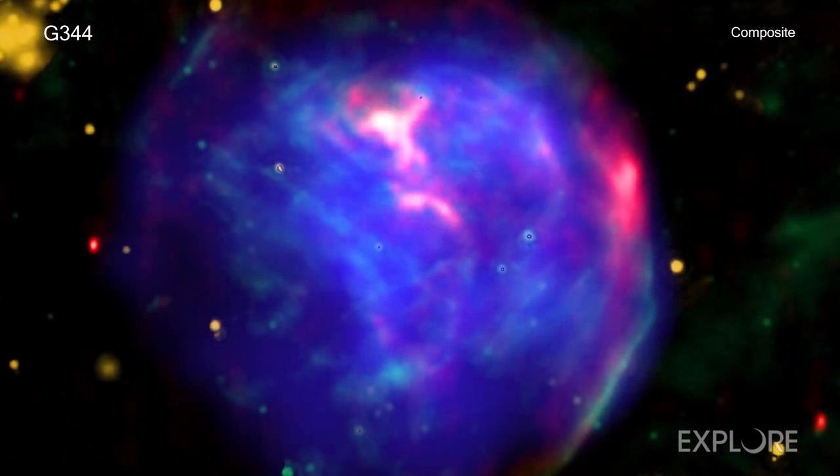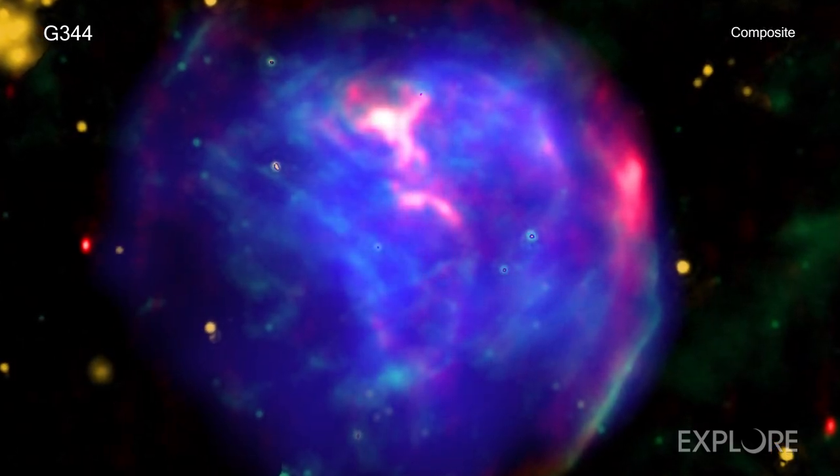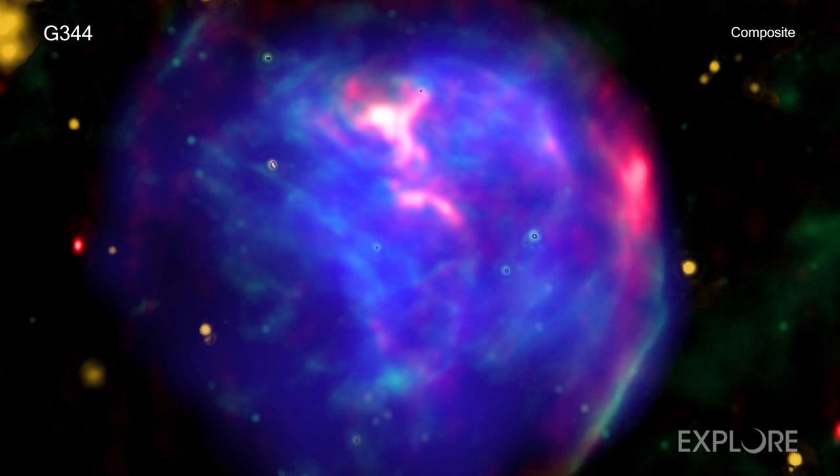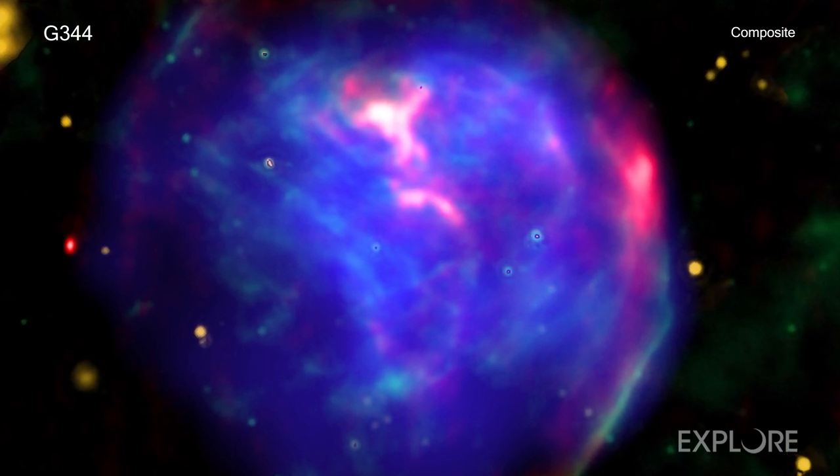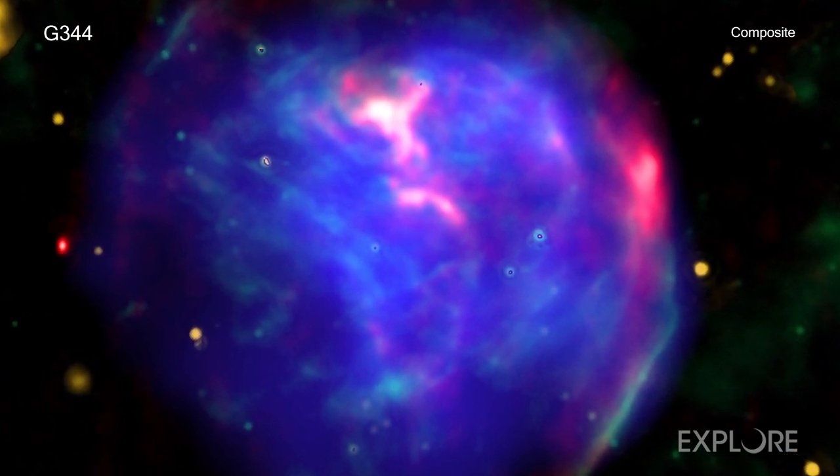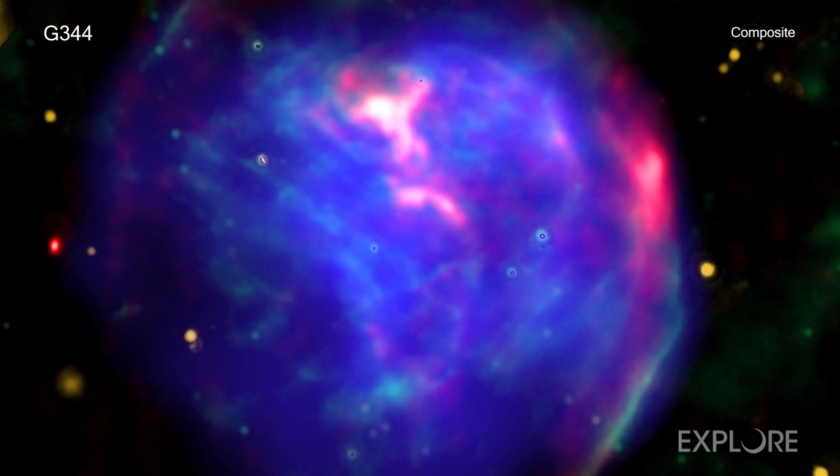The supernova remnant G344.7-0.1 is useful to study because astronomers think it is about 3,000 to 6,000 years old in Earth's time frame.